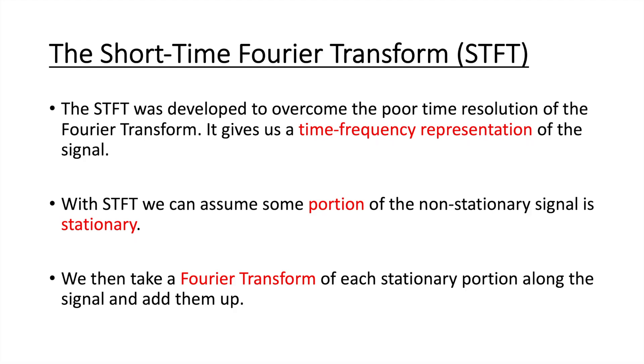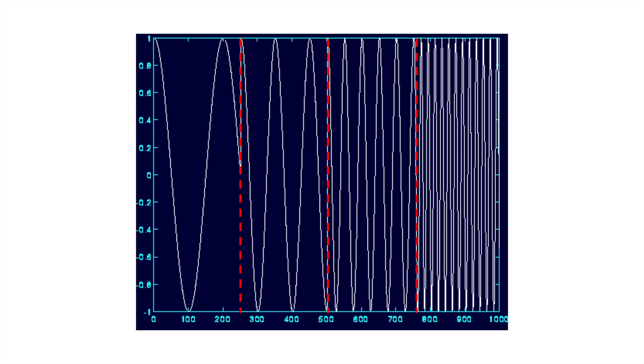What it gives us is a time-frequency representation of the signal. With the Short Time Fourier Transform, we assume some portion of the non-stationary signal is stationary. We then take a Fourier Transform of each stationary portion along the signal and add them up. So here we have a non-stationary signal. We've divided the signal into its stationary parts, so each frequency in these portions is constant. So the signal increases the frequency, but it has these stationary sections.